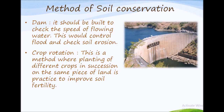Last but not least is crop rotation — a method where planting of different crops in succession on the same piece of land is practiced to improve soil fertility. This method helps to conserve the nutrients of the soil in a natural way.